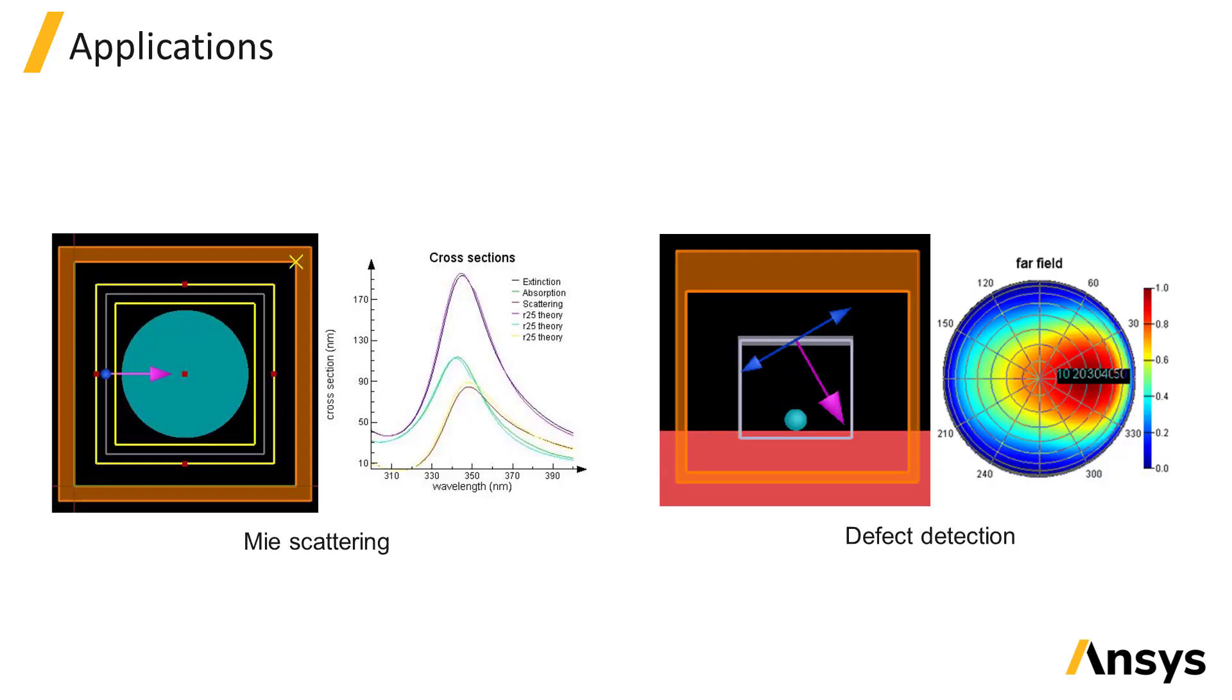Some applications which use the total field scattered field source are MIE scattering and defect detection. The total field scattered field source is useful when you want to be able to separate the scattered fields from the total fields and perform analysis on the scattered fields only, such as by getting the scattering cross section or the angular distribution of scattered light in the far field.